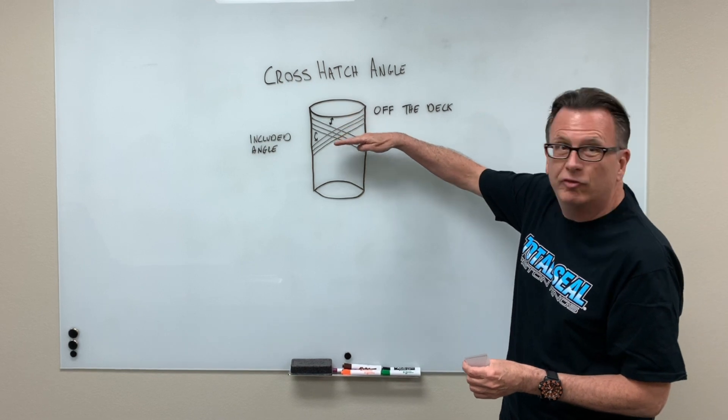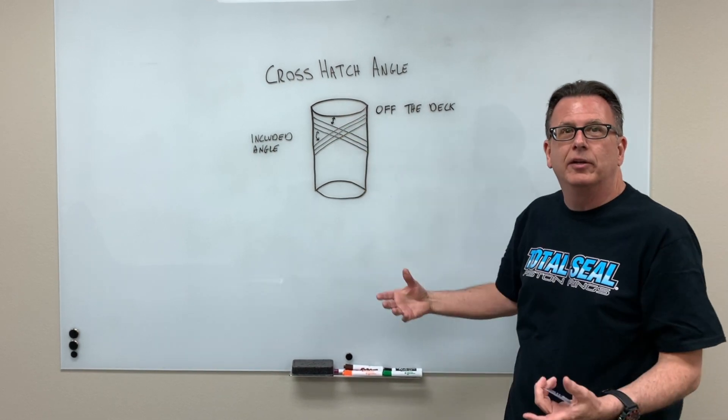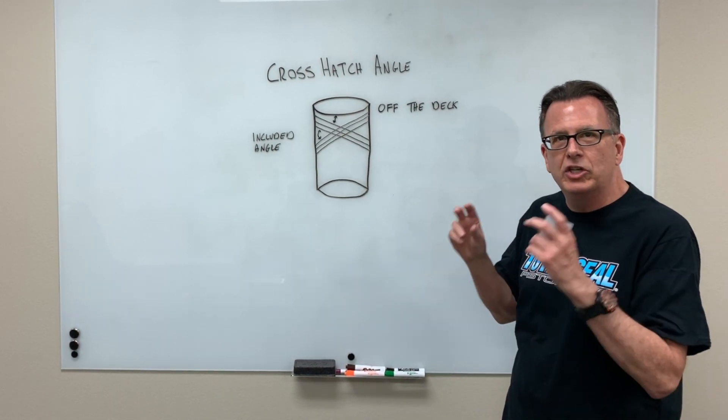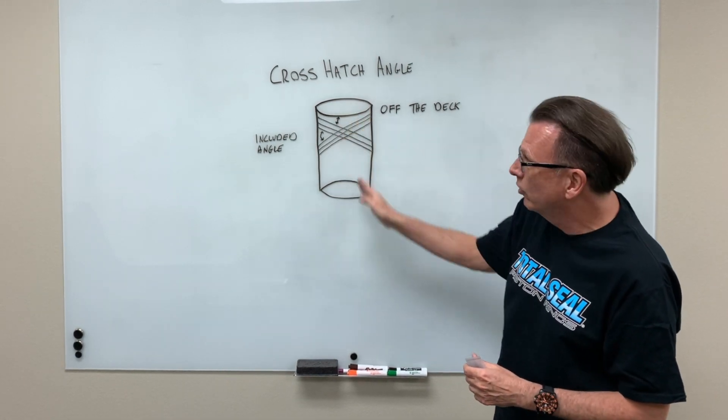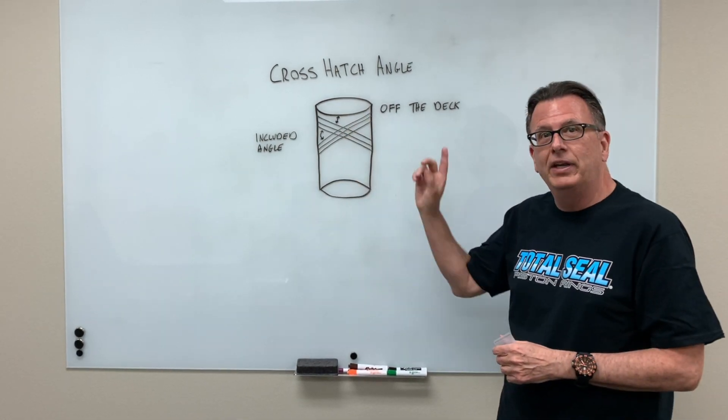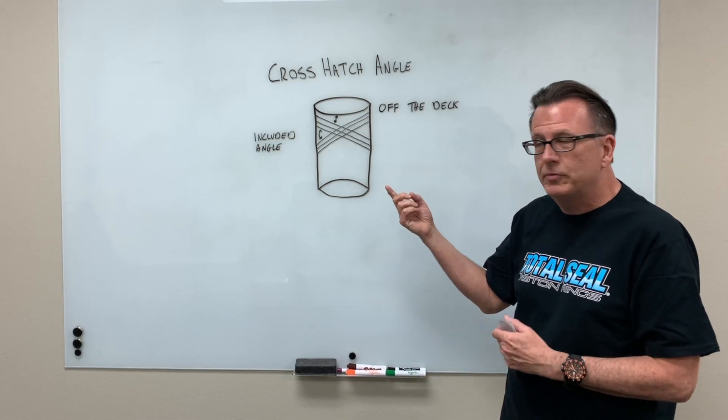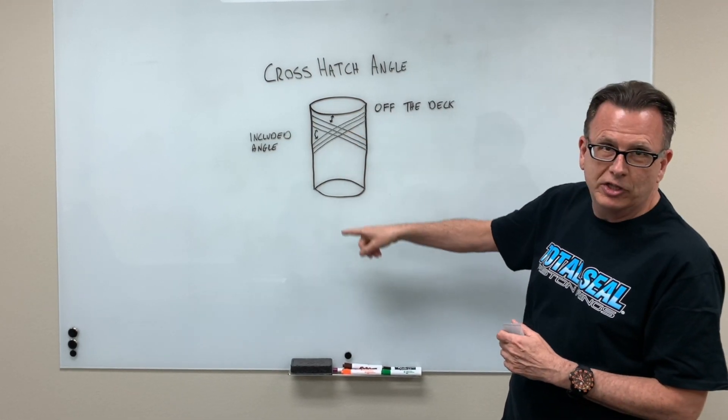If we get the angles too flat, we can get into blow-by problems, we can get into ring-chattering problems. If we get the angles too steep, too vertical, too up and down, we can get into ring-rotation speed problems, we can get into oil-migration problems.